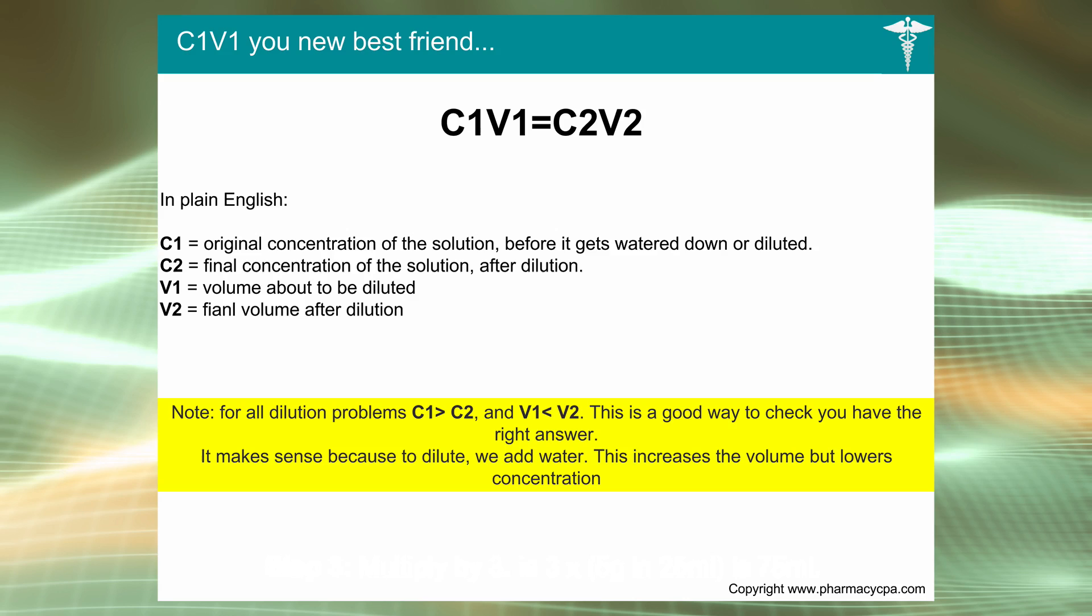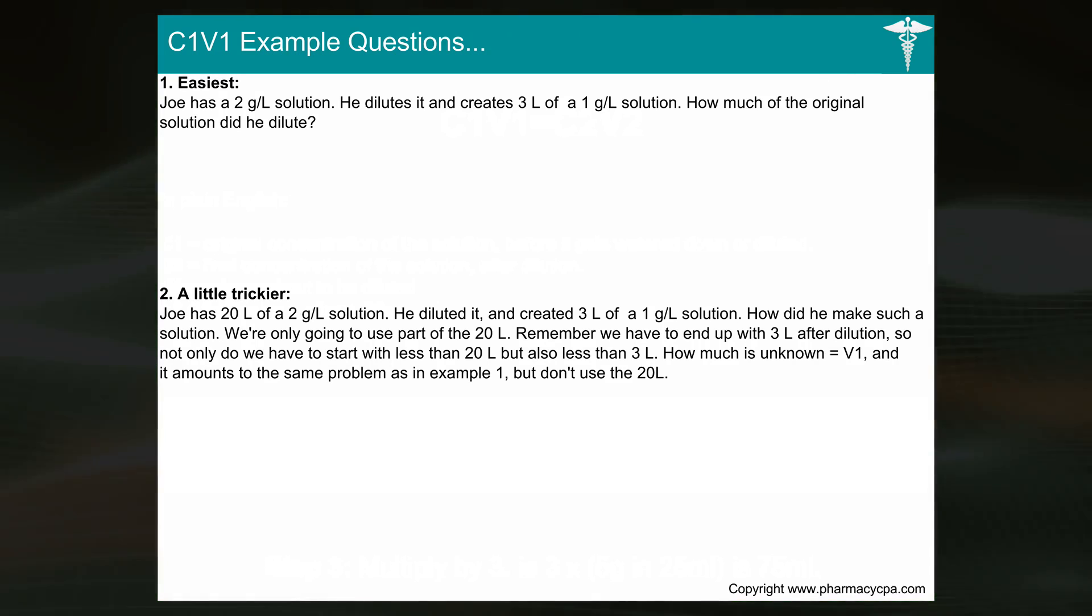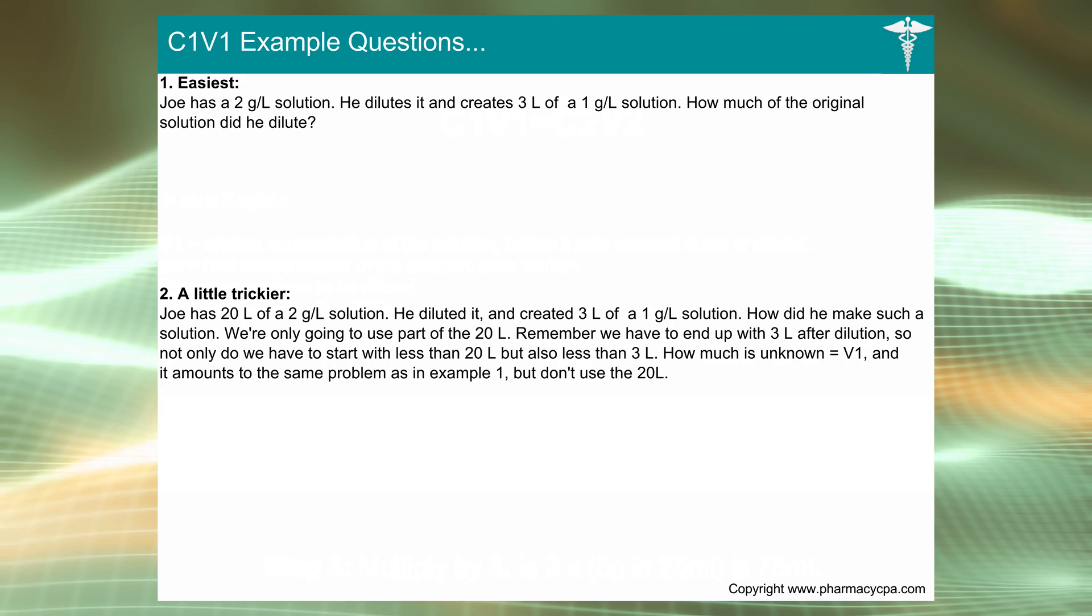C1V1 is your new best friend. I think it's a bit of a lazy friend, but some people like to use it. In plain English, C1 is the original concentration, C2 is the final concentration, V1 is a volume that's about to be diluted, V2 is the final volume after dilution. Joe has an original 2 grams per liter solution. He dilutes it and creates 3 liters of a 1 gram per liter solution. How much of the original solution did he dilute? The first step is you take the C1V1 formula. You've got 2, which is the original concentration, and the volume is the unknown.